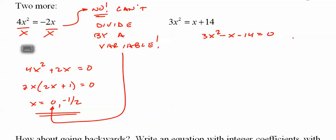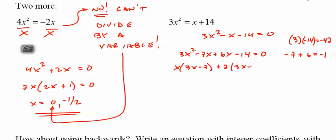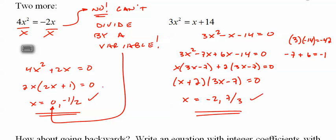3 times negative 14 is negative 42. I'm looking at negative 7 plus 6. 3x squared minus 7x plus 6x minus 14. x, leaving me 3x minus 7 plus 2, leaving me 3x minus 7. x equals negative 2, 7 thirds. Check and make sure they work.